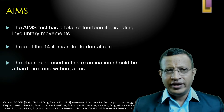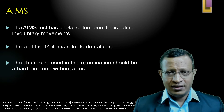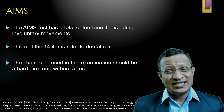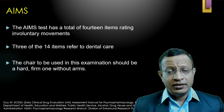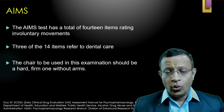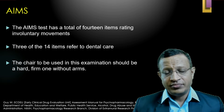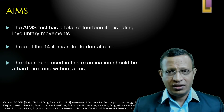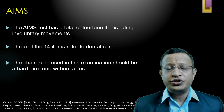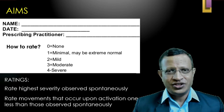The AIMS scale has 14 items for rating involuntary movements, with three items exclusively for dental status. The instrument used for assessment requires a chair with a hard surface and no armrests — that is very essential. The chair to be used in the examination should be hard, firm, and without armrests.